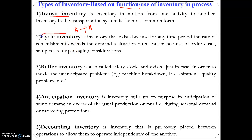The next one is cycle inventory, which we will be focusing on more. As in the previous example, if your supply is 450 and your demand is 400 at the end of each day, you will have an inventory of 50. This 50 is your cycle inventory. At the end of any time period — a day, month, or year — the excess quantity (supply minus demand) remaining in hand is known as cycle inventory.